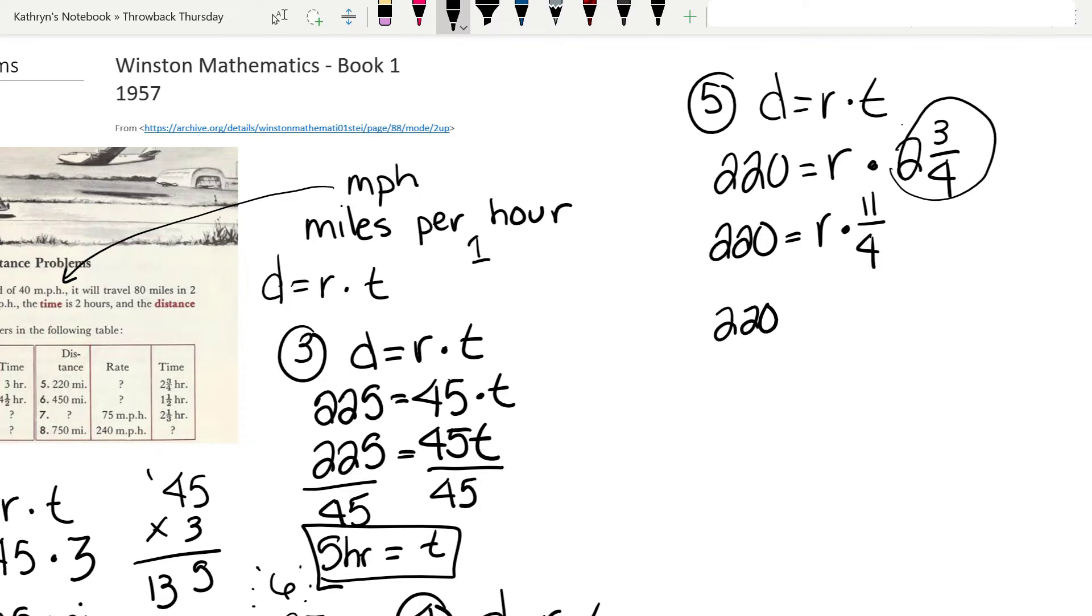I'm going to rewrite it: 220 equals 11 over 4 r. When we have a number times a letter, we multiply. The opposite of multiplying is dividing. But to make our lives easier, we're actually going to multiply by the reciprocal. That means we have to take 220 times 4. We have 880 over 11 equals r.